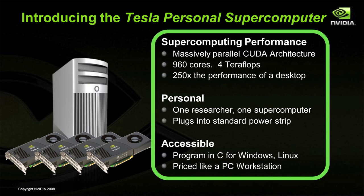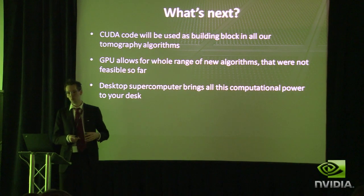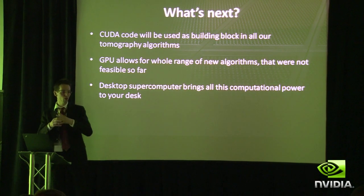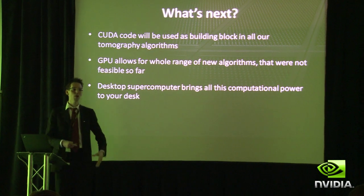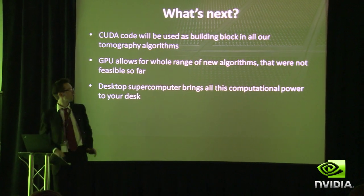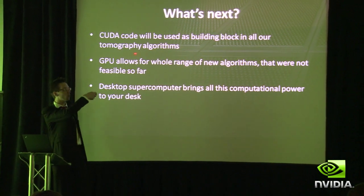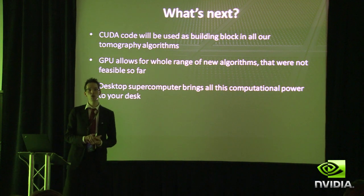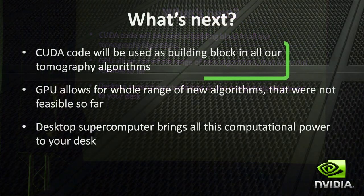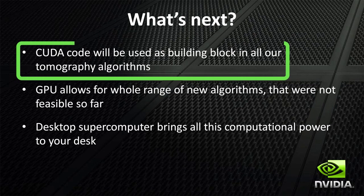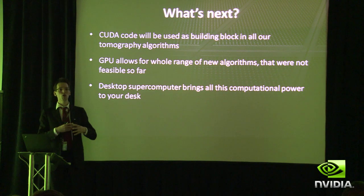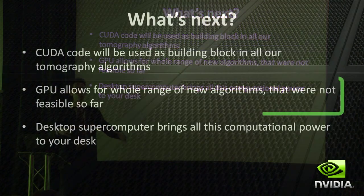Because we keep on building all these slow algorithms and we want to use them, we have to move our whole research line into the realm of GPU computing. CUDA code is currently already, and will be, used as basic building blocks for all our new tomography algorithms. The GPUs allow for a new range of algorithms that were simply out of reach before.